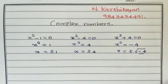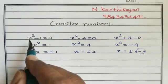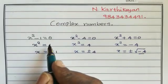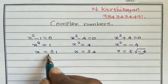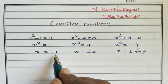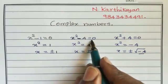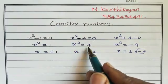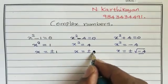Today we are discussing complex numbers. First, what are the solutions of x² - 1 = 0? That is x² = 1, so x = ±1. Then, what are the solutions of x² - 4 = 0? That is x² = 4, and x = ±2.